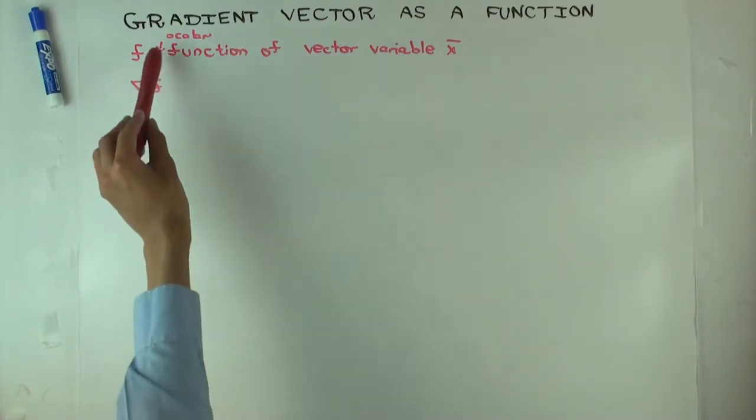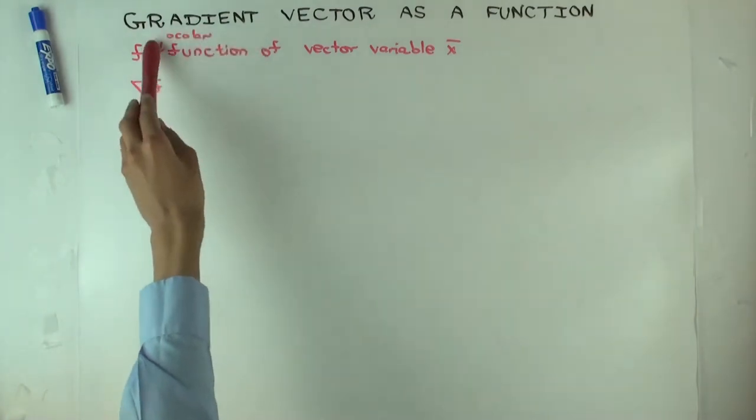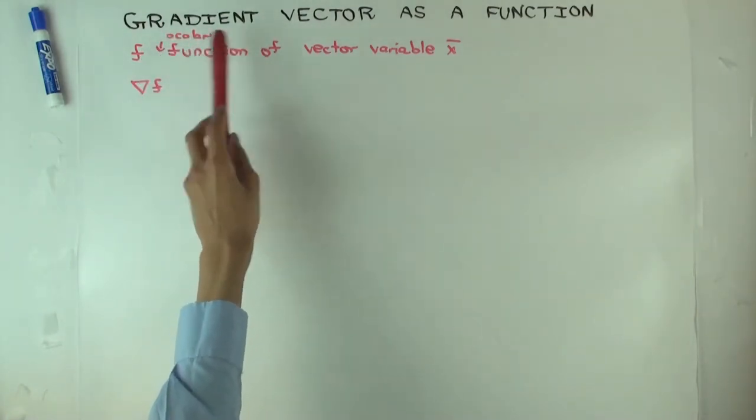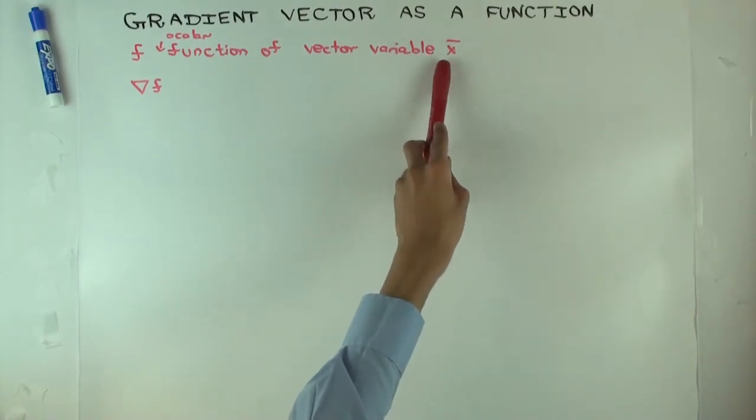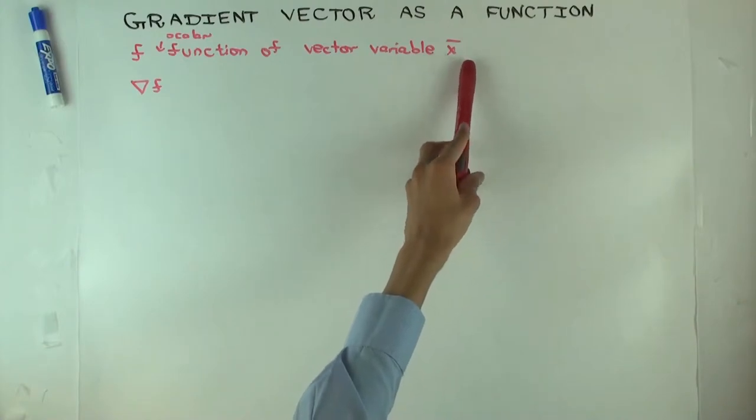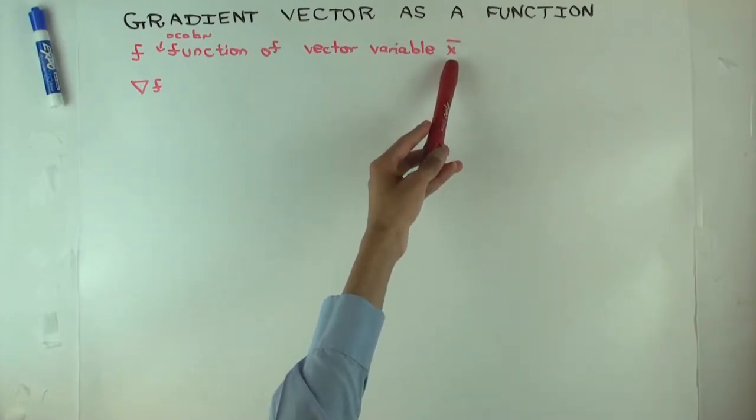Suppose you have a function f, it's a scalar function. This means it's a function which takes real number values, but the input is a vector variable. That means one way of thinking of it is it's a function of many variables. So if this vector is in five dimensions, it's a function of five variables.